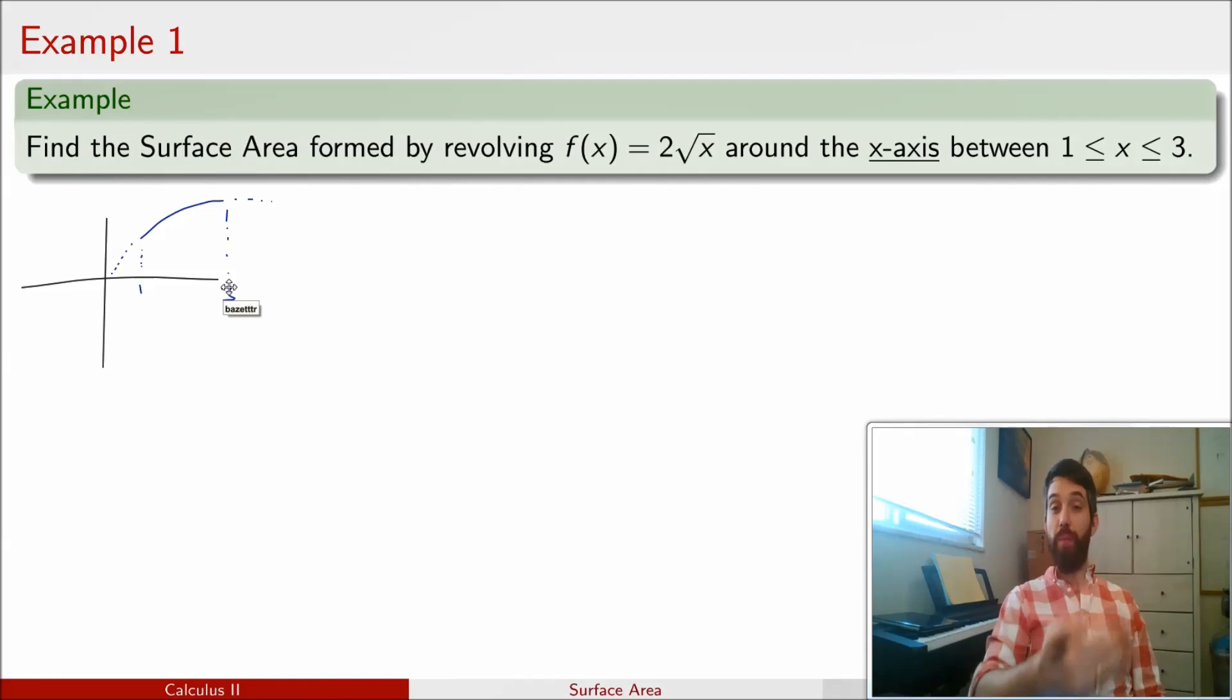So I know that in my formula I'm going to have to figure out f prime, so I may as well go ahead right now and compute that. This is just going to be 1 divided by the square root of x.